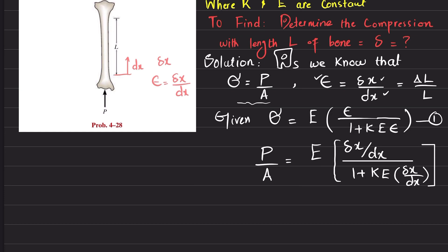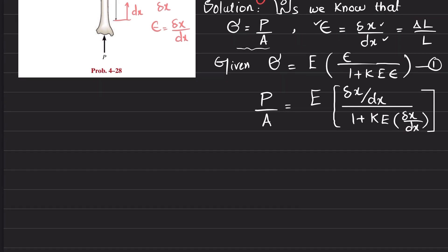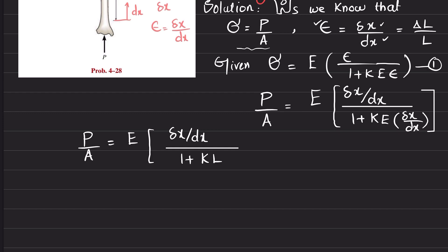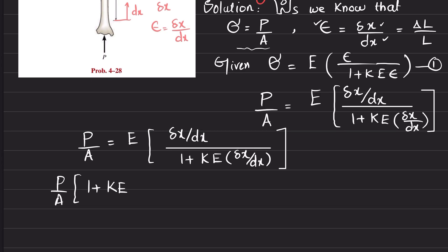This is equation number one. Now, P over A equals E times (delta x over dx) divided by 1 plus k times E times (delta x over dx). Multiplying both sides by the denominator: P over A times (1 plus k times E times delta x over dx) equals E times delta x over dx.